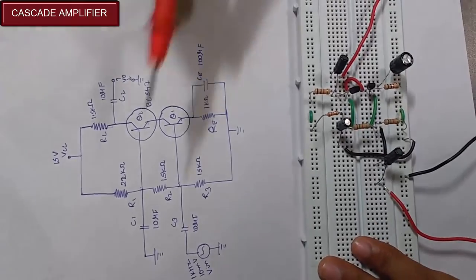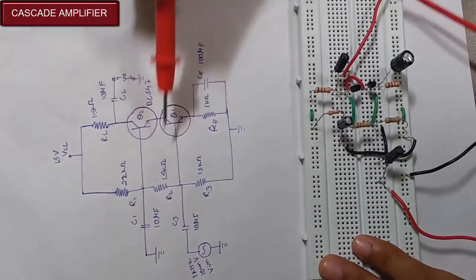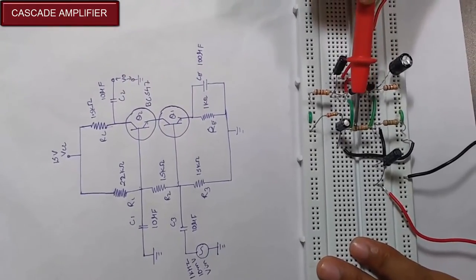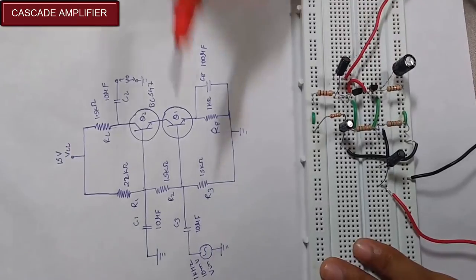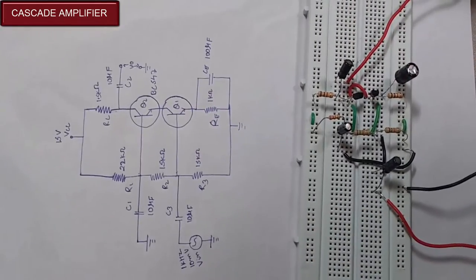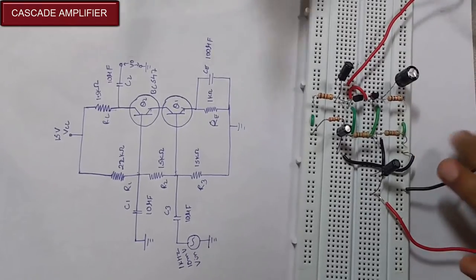R2 is given to both the bases of Q1 and Q2—this resistor here acts as R2 which is given to both bases. R3 is given to ground; this wire here is the ground wire.